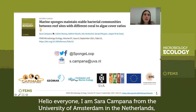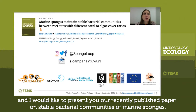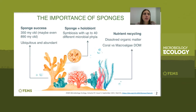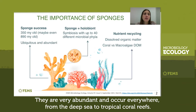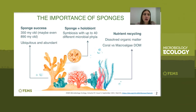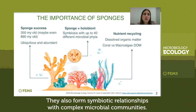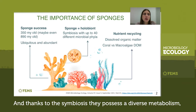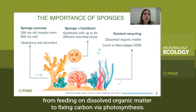Hello everyone. I'm Sarah Campana from the University of Amsterdam in the Netherlands and I would like to present our recently published paper on stable bacterial communities of marine sponges. Sponges are the oldest living animals. They are very abundant and occur everywhere from the deep sea to tropical coral reefs. They also form symbiotic relationships with complex microbial communities, and thanks to this symbiosis they possess a diverse metabolism, from feeding on dissolved organic matter to fixing carbon via photosynthesis.